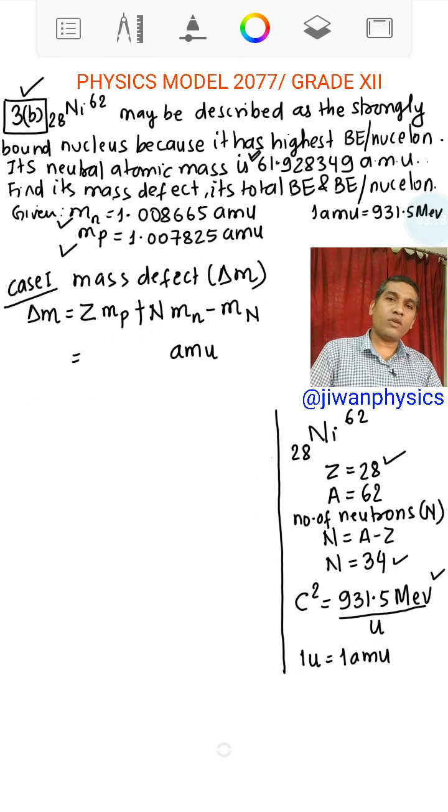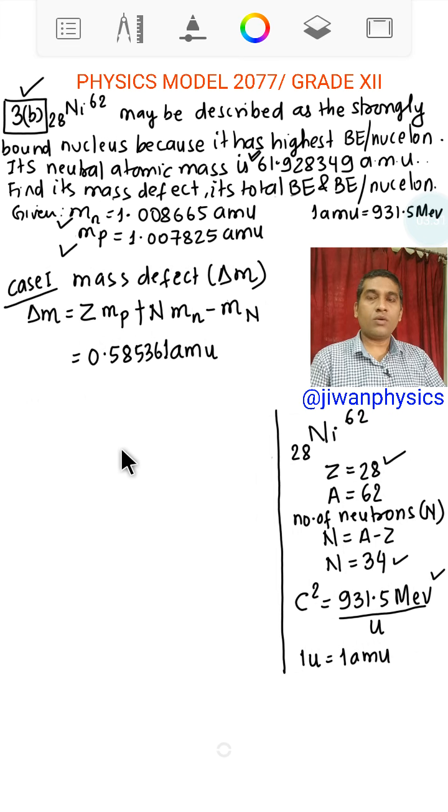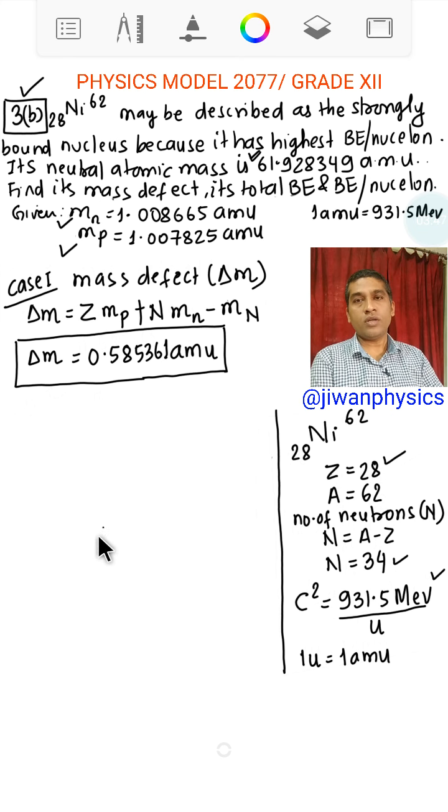I have calculated the value of delta M and its value is 0.585361 and the unit is AMU. Let me put this in a box and we use this result in finding total binding energy and binding energy per nucleon.